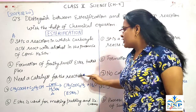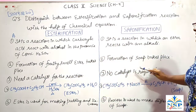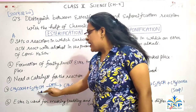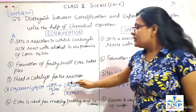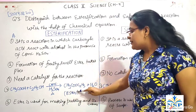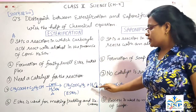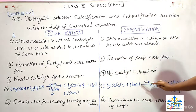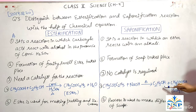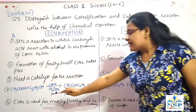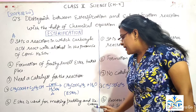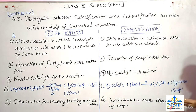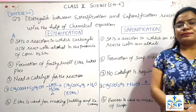Esterification needs a catalyst for the reaction; no catalyst is required for saponification. When acetic acid reacts with ethyl alcohol in the presence of concentrated H2SO4, it gives ester and water. When ester reacts with alkali on heating, it gives ethyl alcohol and soap. Ester is used for making puddings and ice creams, and the process of saponification is used for making different types of soap.